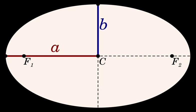Averaging over the mean anomaly — the fraction of the orbital period that has elapsed since paracenter, expressed as an angle — finally gives the time-averaged value a(1 + e²/2).